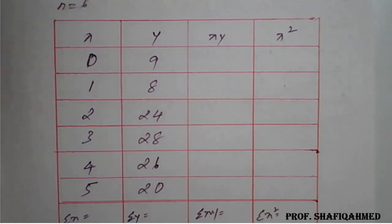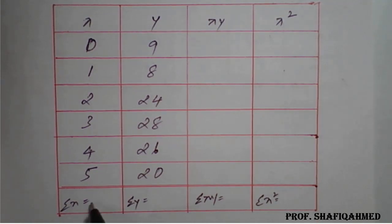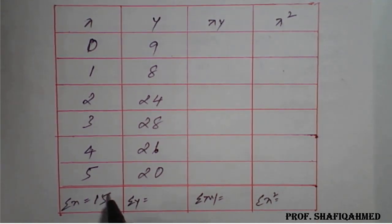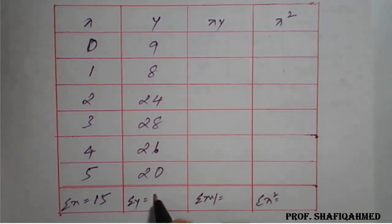Then we have to go for the summations of this. Summation of x is 15. On adding all the values of y, summation of y will get 115.